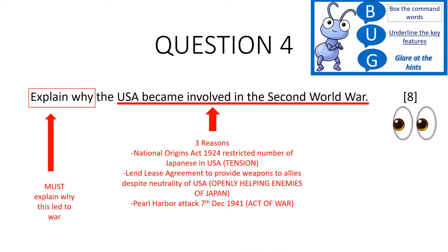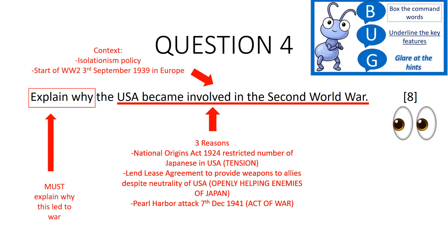There are three reasons in this case. First, the National Origins Act of 1924, which restricts the number of Japanese in the USA, leading to tension — a reason why they got involved in the Second World War. Second, the Lend-Lease Agreement, which provided weapons to the Allies despite the neutrality of the USA, meaning they were openly helping enemies of Japan. Finally, the Pearl Harbour attack on the 7th of December 1941, which was an outright act of war and probably the main reason why the USA becomes involved.